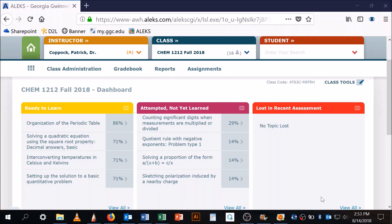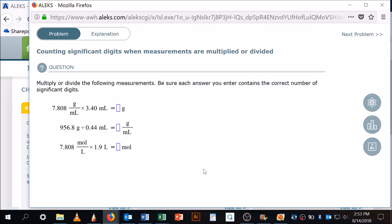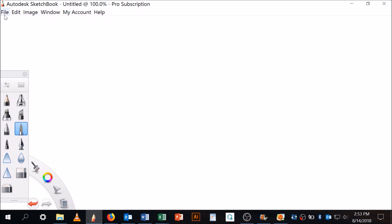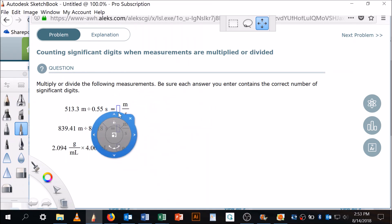Okay, so now I want to do counting significant digits when measurements are multiplied or divided. Let's click on that and you get these problems here. They're slightly different problems than the ones I just copied over, but it's basically the same problems. Let's go here, file, add image, screenshot. Okay, slightly different problems, same form.